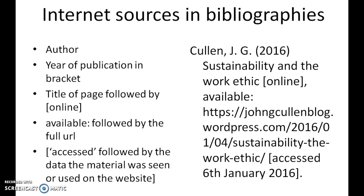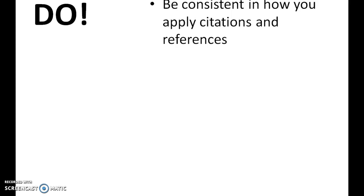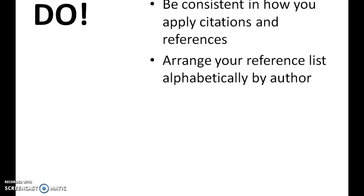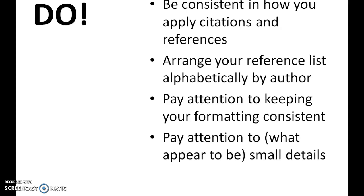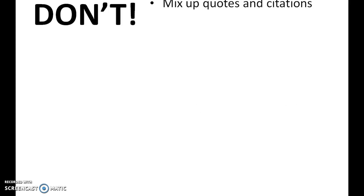Here are some important do's and don'ts based on ten years of grading student assignments. Do be consistent in how you apply citations and references — inconsistencies provoke a negative reaction from academics. Arrange your reference list alphabetically by author — failing to do so is an easy way to show you don't care about your readers. Pay attention to keeping your formatting consistent: font, colors, punctuation, and small details like whether you've put a bracket around your issue number.